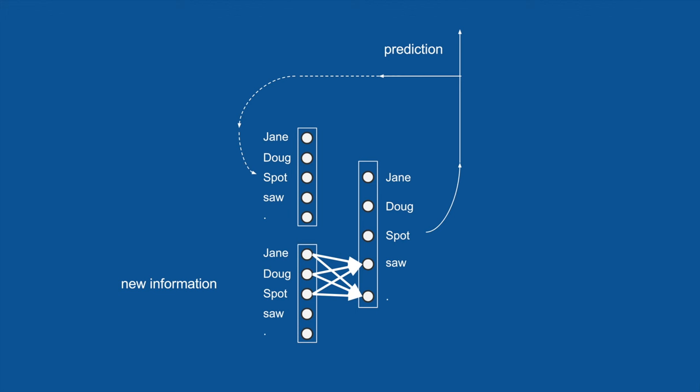For instance, any time a name comes up — Jane, Doug, or Spot — we would expect that to vote heavily for the word saw or for a period, because those are the two words in our dictionary that can follow a name. Similarly, if we had predicted a name on the previous time step, we would expect those to vote also for the word saw or for a period.